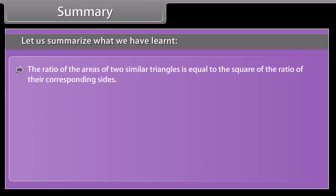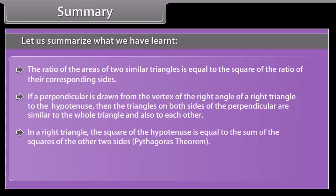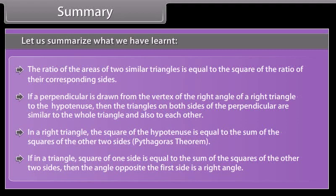Summary: The ratio of the areas of two similar triangles is equal to the square of the ratio of their corresponding sides. If a perpendicular is drawn from the vertex of the right angle of a right triangle to the hypotenuse, then the triangles on both sides of the perpendicular are similar to the whole triangle and also to each other. In a right triangle, the square of the hypotenuse is equal to the sum of the squares of the other two sides — Pythagoras theorem. If in a triangle the square of one side is equal to the sum of the squares of the other two sides, then the angle opposite the first side is a right angle.